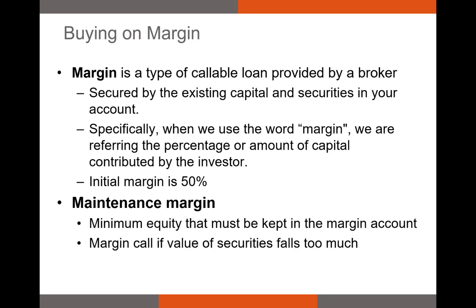Now let's talk about buying on margin. Margin is a callable loan provided by a broker. You can borrow up to a certain limit in order to buy more securities. You pay your broker an interest rate plus a service fee; the interest rate your broker charges is generally relatively low. The loan is secured by the assets in your brokerage account. Going forward, I'll refer to margin as the percentage of capital contributed by the investor — in other words, your own personal equity in your brokerage account, what you have left when you pay back your broker.